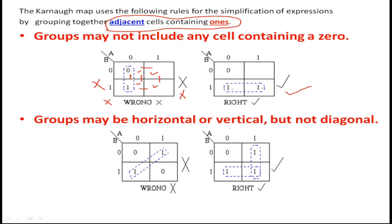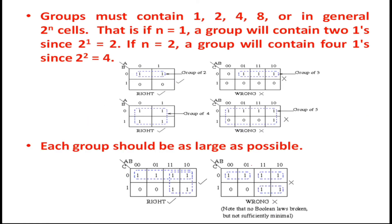Groups may be horizontal or vertical but not diagonal. Diagonal cells cannot be grouped even though ones are present in both cells. There is a one in this cell and a one in that cell — I cannot group these two diagonal ones. This rule does not allow it. Only elements present either vertically or horizontally can be grouped.